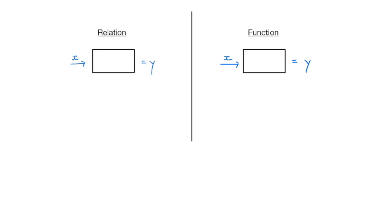We previously discussed how a relation is some type of relationship between two quantities, like an x and a y value. One of the ways we can represent a relation is by using an equation. I can choose whatever value I want for x, substitute it into whatever my equation happens to be, and that will give me a y value. A function works the same way — I can choose any value for x, substitute it in, and get a y value.